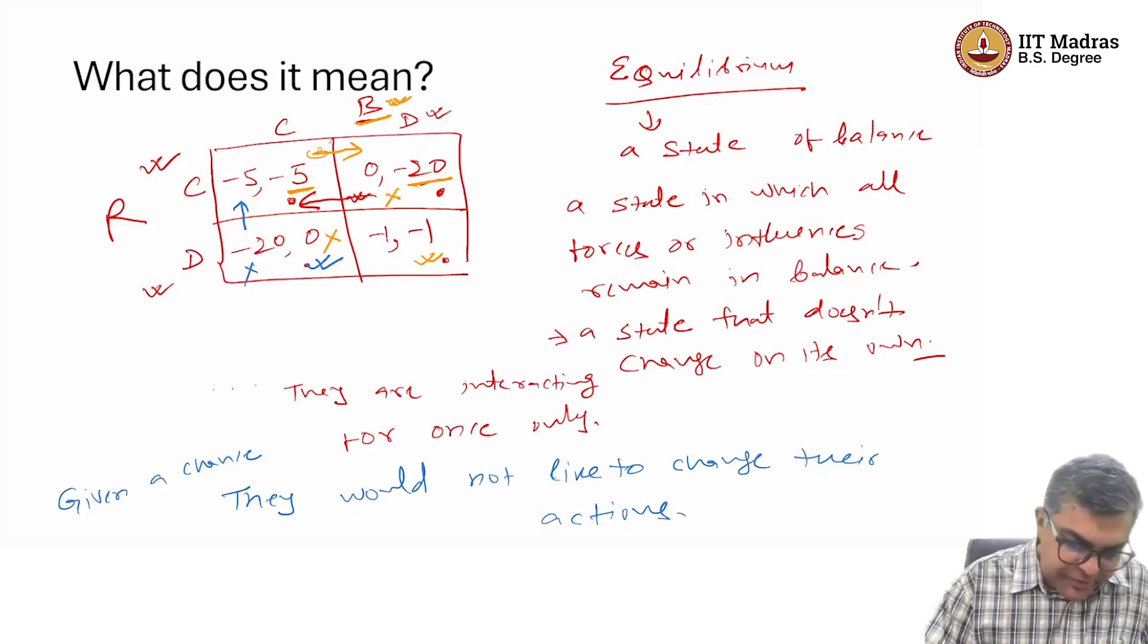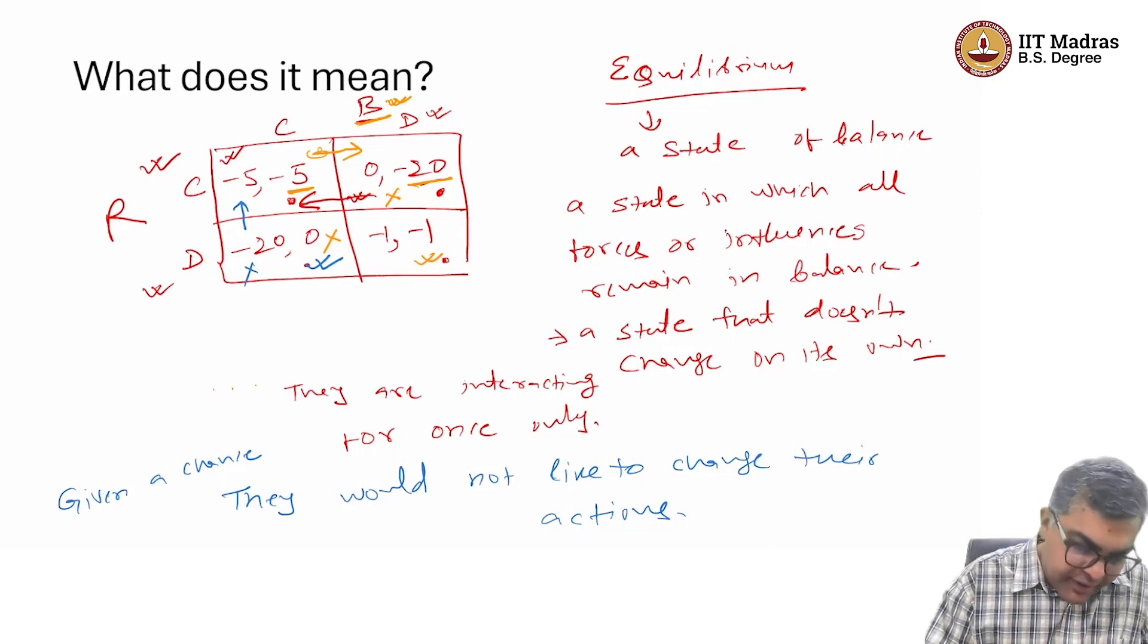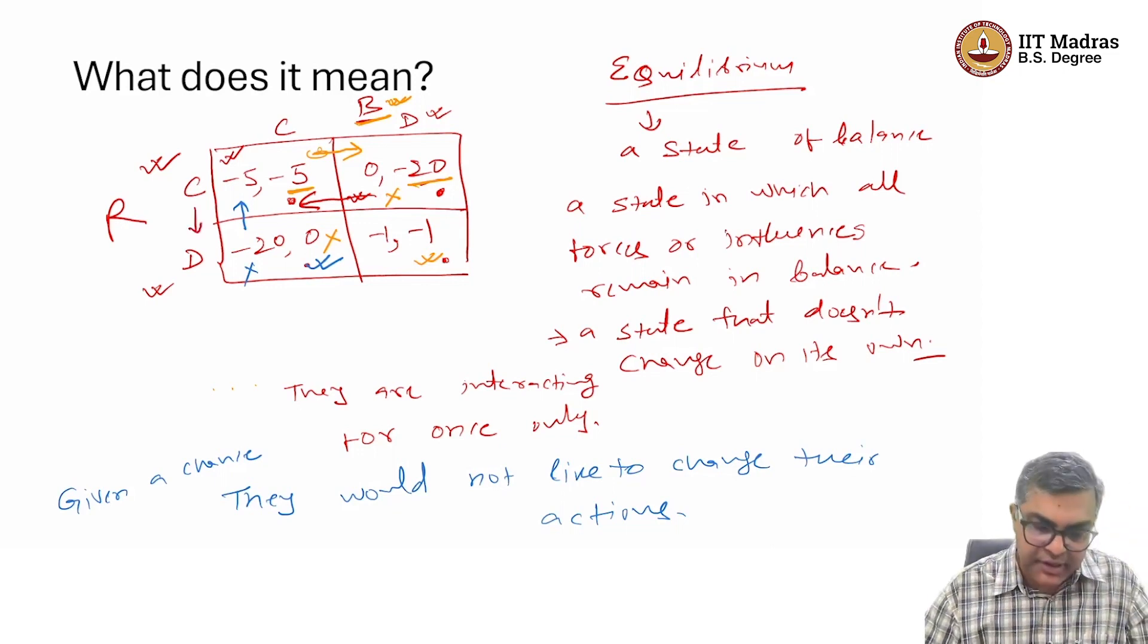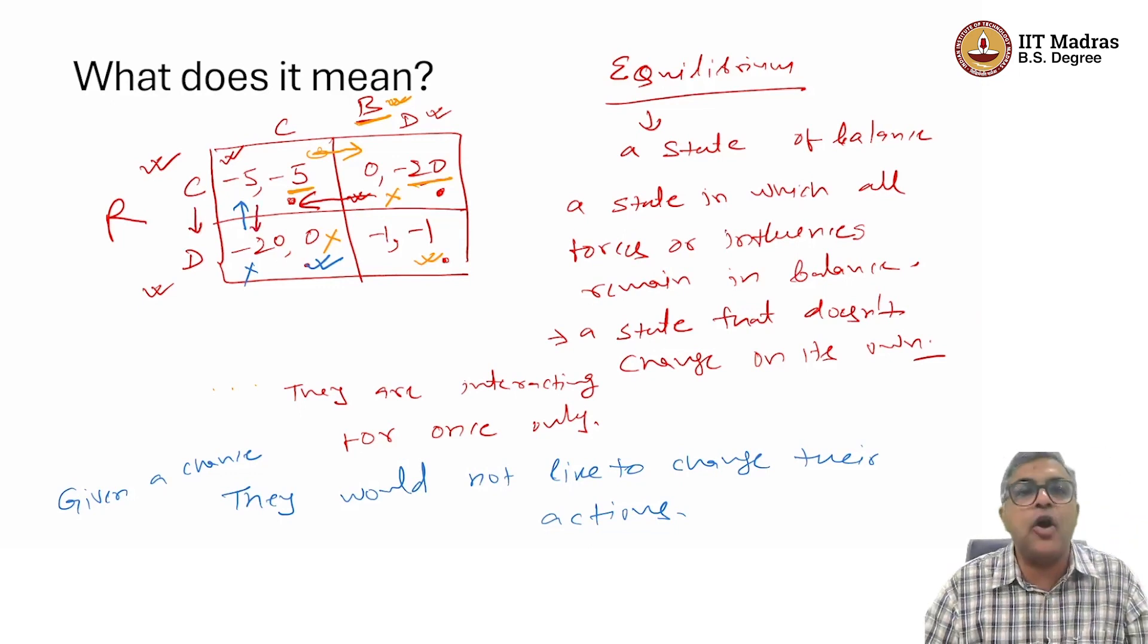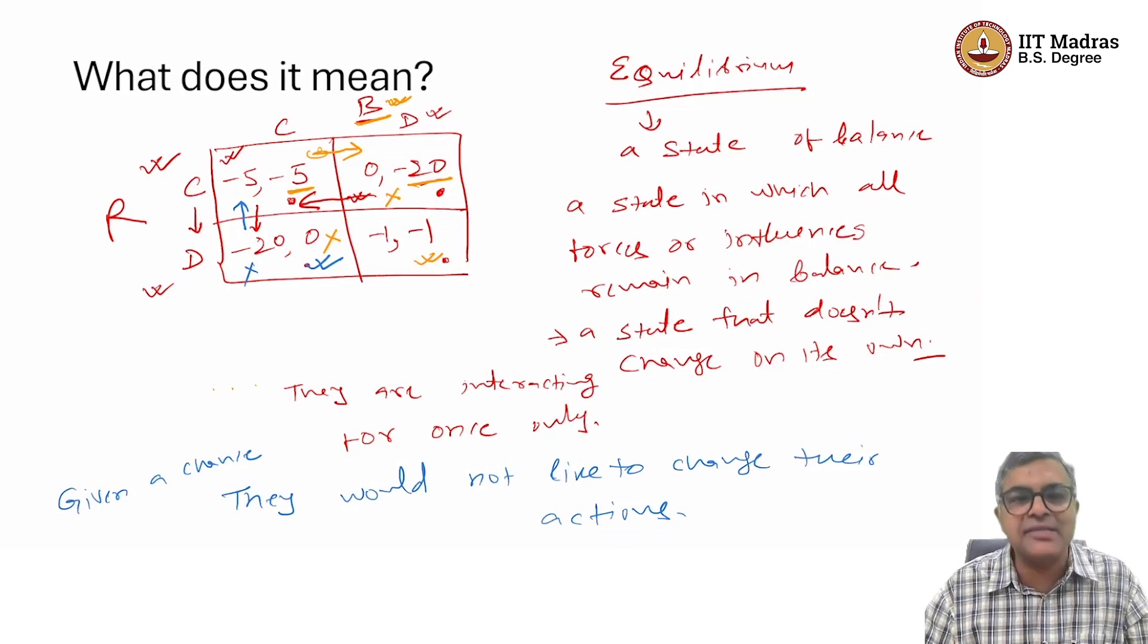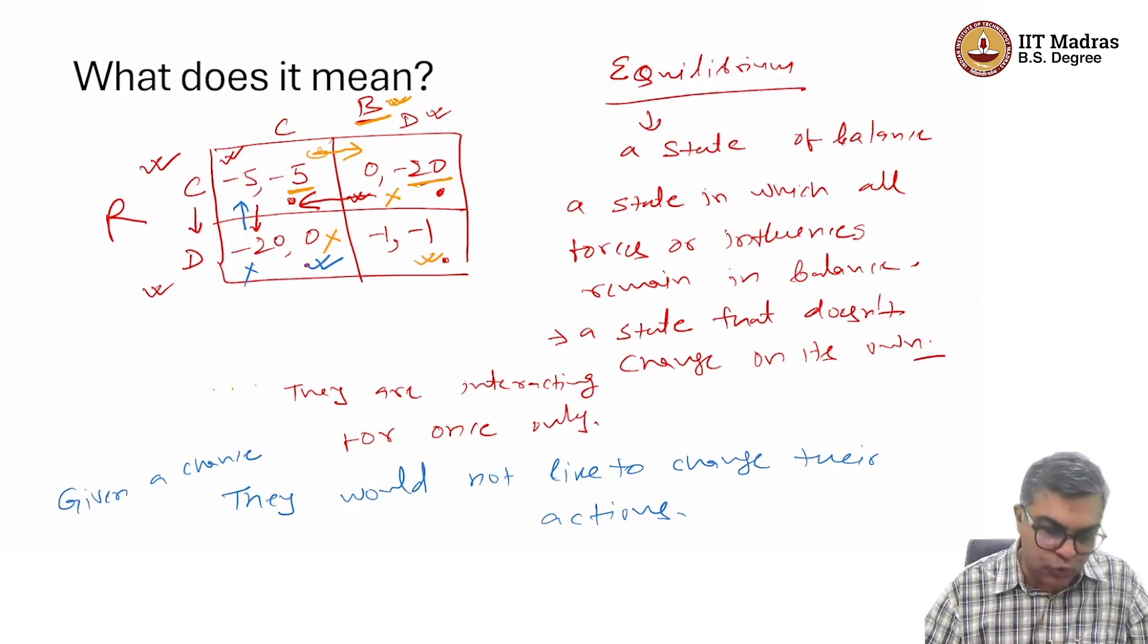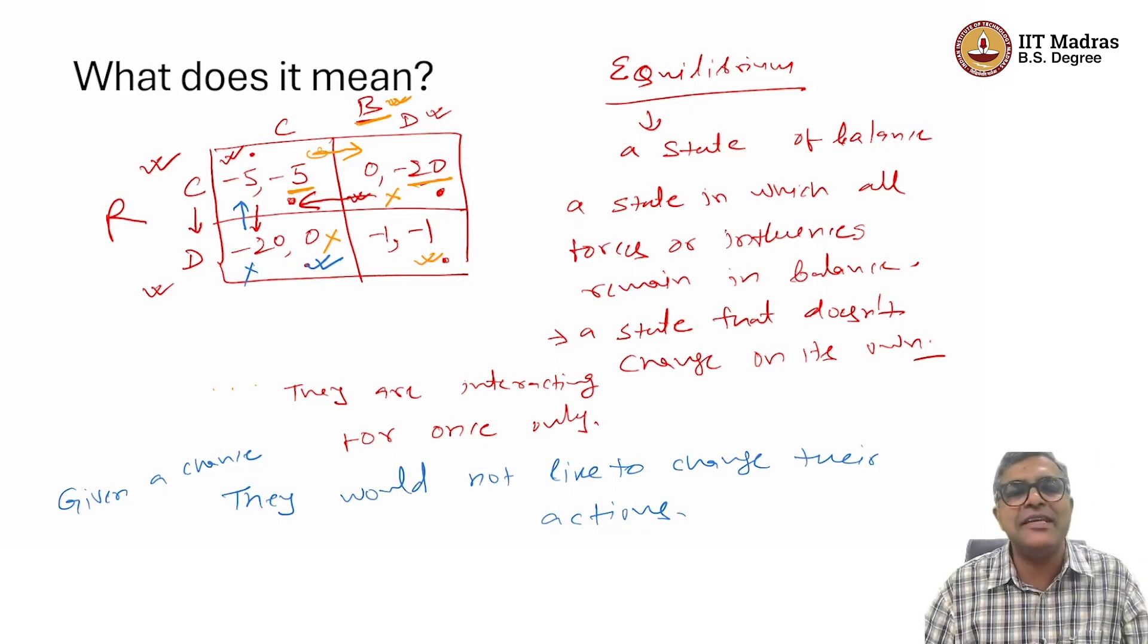Let us look at it from Ranga's perspective. They are here. If Ranga is given a chance, should he modify his action? How can he modify? He can move from C to D. And if he moves from C to D, he will decrease his payoff or he will increase his jail sentence from 5 years to 20 years. So, if Ranga is given a chance, he would also not like to change his action if they happen to be in C, C.